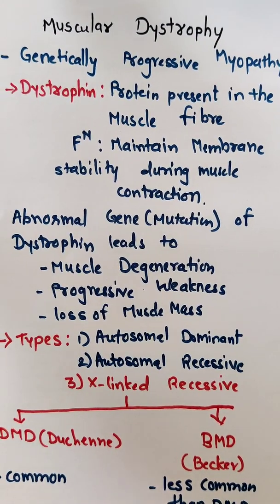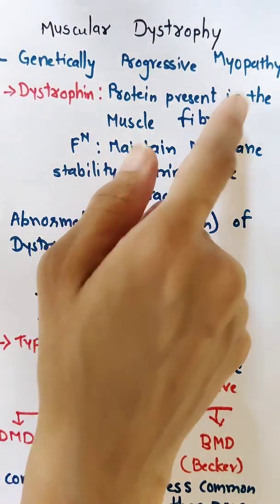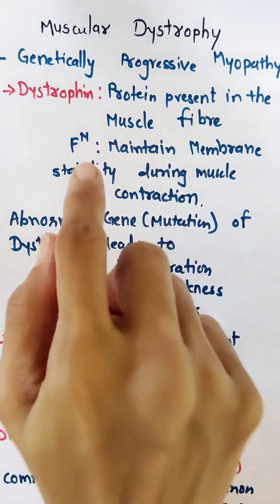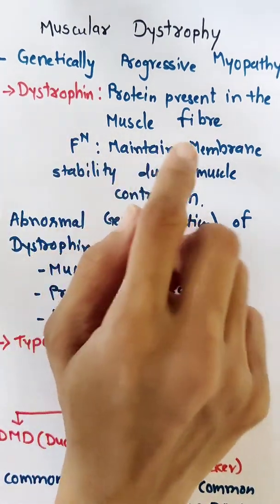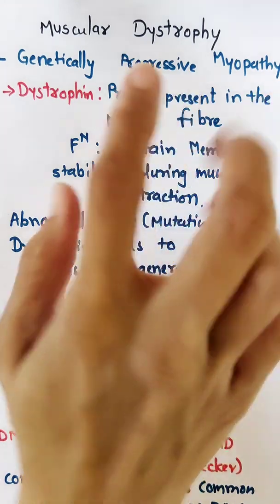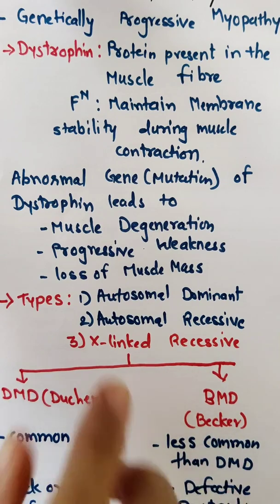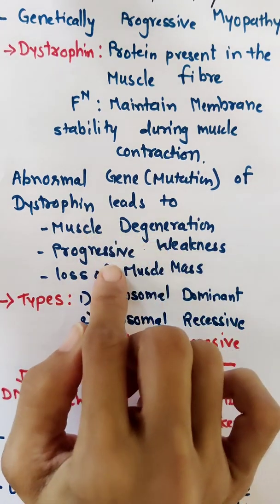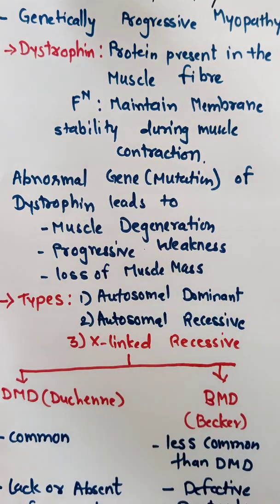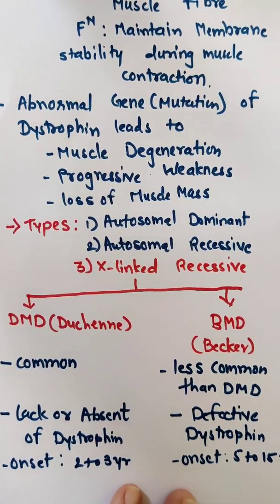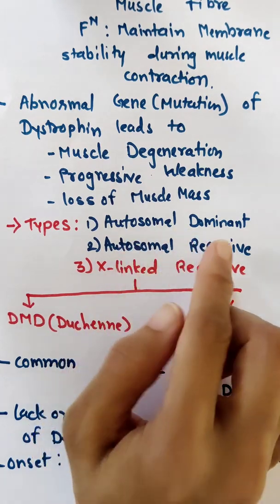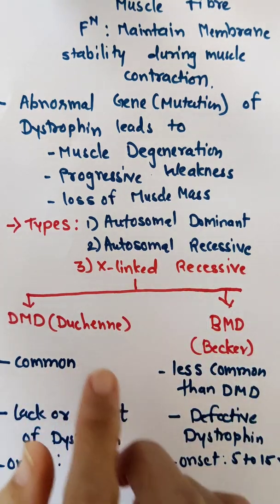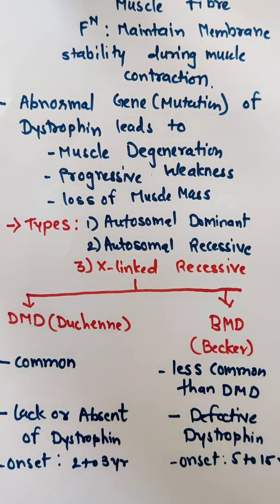To revise: muscular dystrophy is a genetically progressive myopathy. Dystrophin is a protein in the muscle fiber that maintains membrane stability during muscle contraction. In muscular dystrophy, abnormal mutation of dystrophin leads to muscle degeneration, progressive weakness, and loss of muscle mass. There are three types — autosomal dominant, autosomal recessive, and X-linked recessive — with X-linked recessive divided into DMD and BMD.